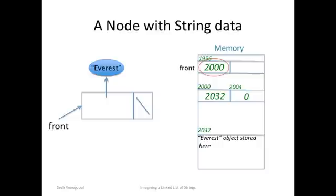At the address 2000 the data part of the node holds the address of a string. We use slant and green lettering for addresses to distinguish them from integer data. The address in the data part is 2032. The next part holds 0 which is a null pointer.